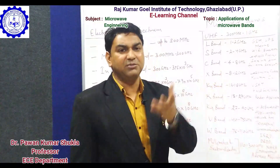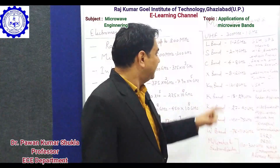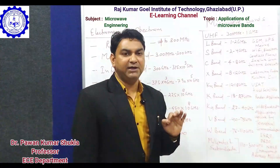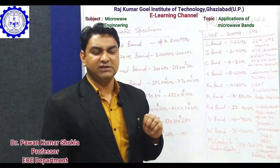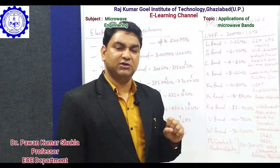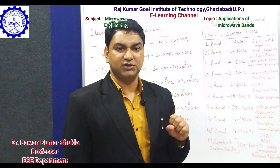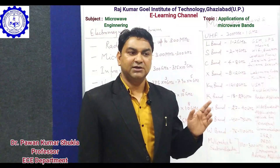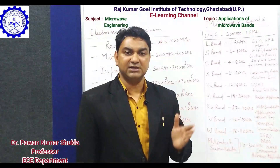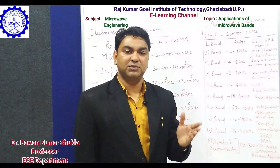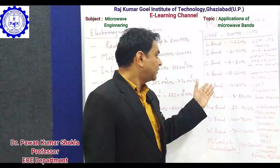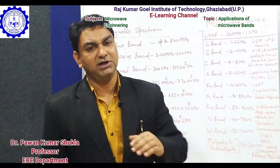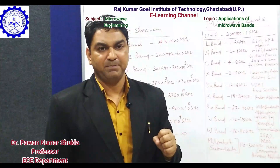There are a large number of applications under the S band category. The next band is the C band, which is specifically used for full-time satellite communication. Satellite TV generally operates in this frequency range, and different long-distance communication devices and equipment are also fabricated under this frequency range.